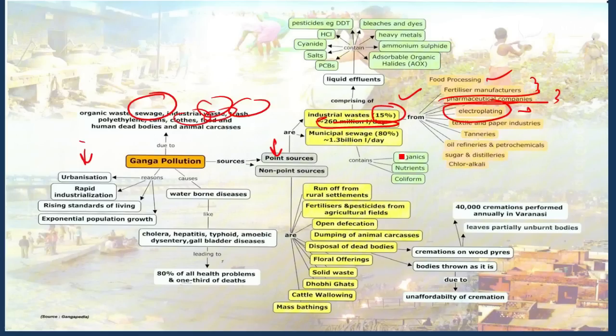Municipal sewage waste contains various nutrients, coliform, bacteria, and organics which add pollution to the river. Industrial waste also contains in its liquid effluent various chemicals like PCBs, sod, cyanides, HCL, pesticides, bleaches and dyes, heavy metals, ammonium sulphate, and various organic halides. Please remember some of these points. You can add this in your answer to enrich your answer.